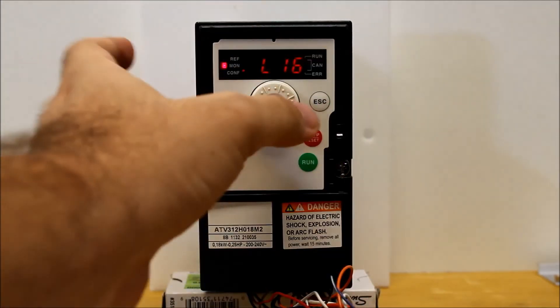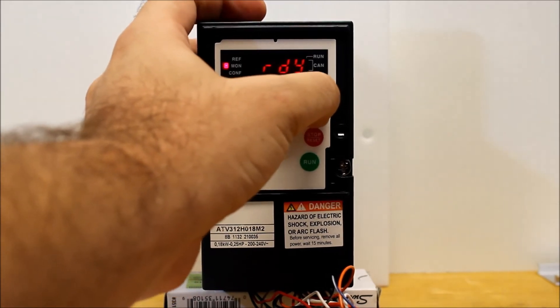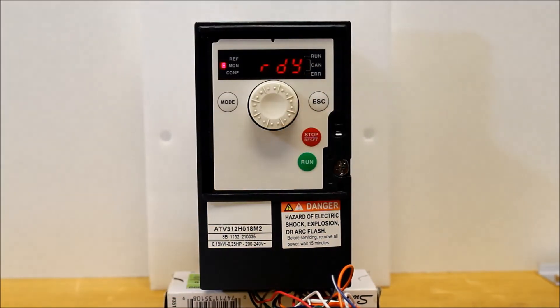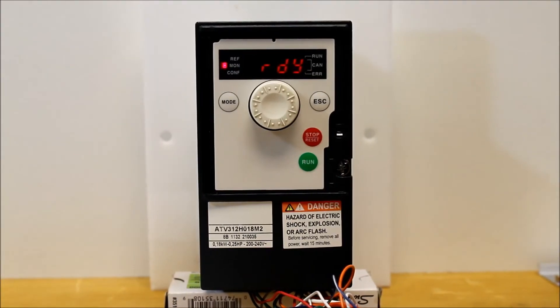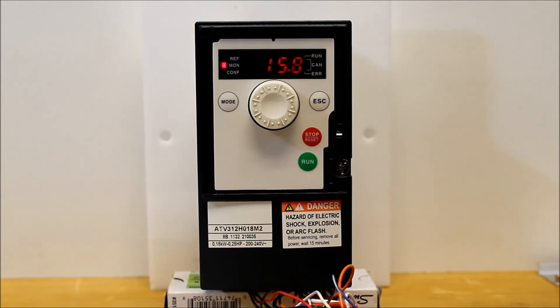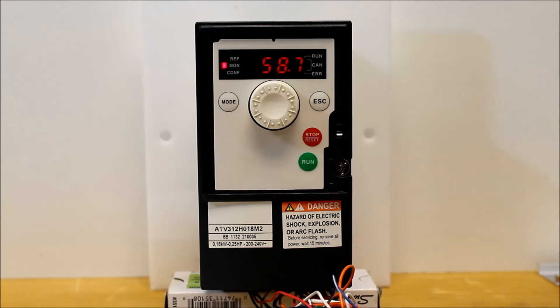Once that's done, you can escape back out to your main screen. Now we can try to run it. We can simulate it here and it can ramp up to whatever speed you want. Now I'm going to toggle my logic input 6 to trigger that fault.